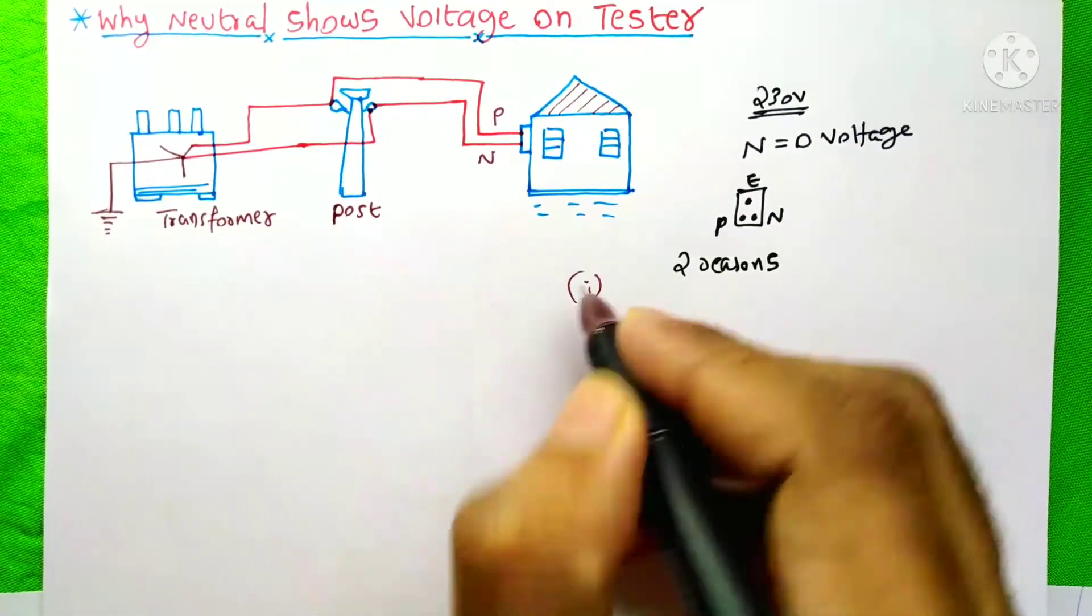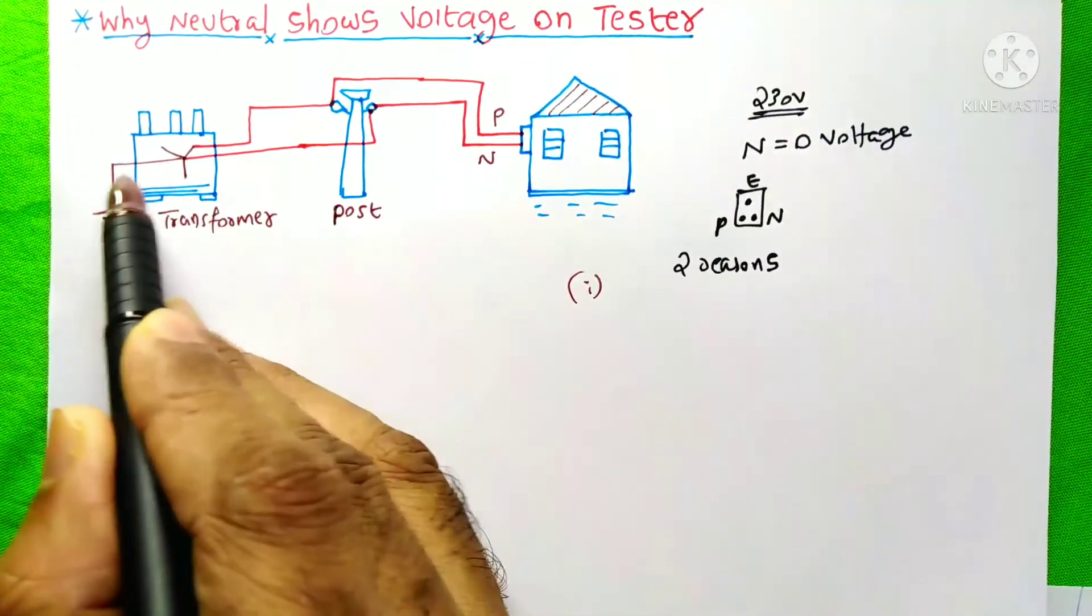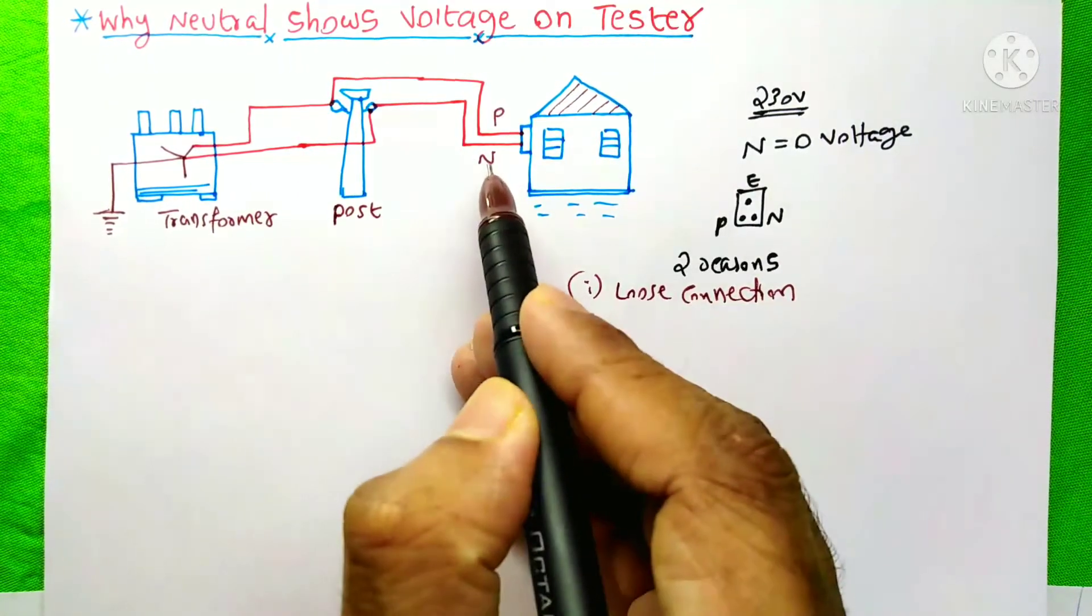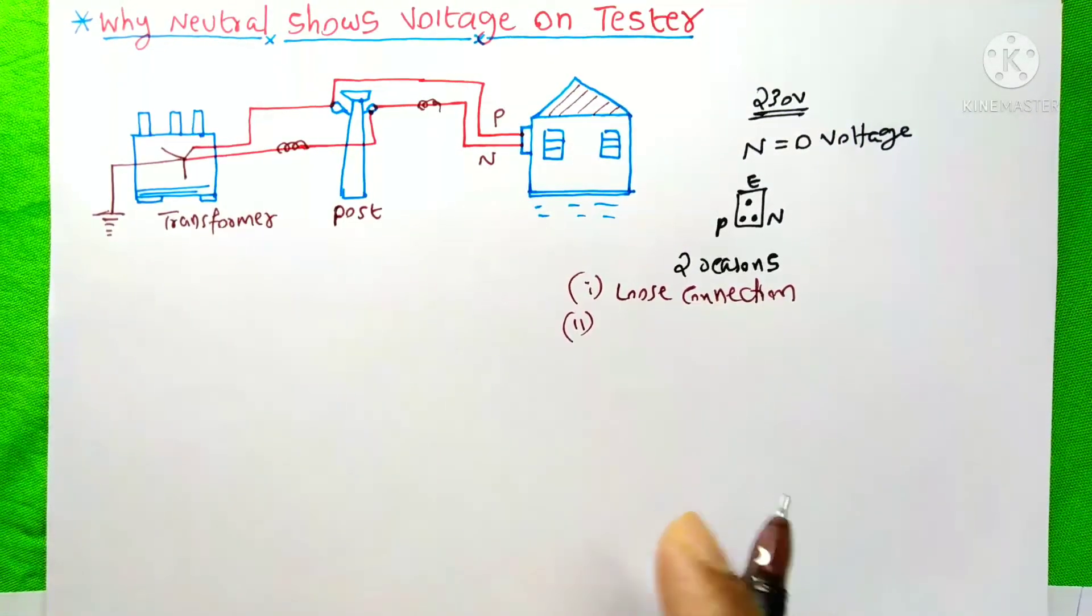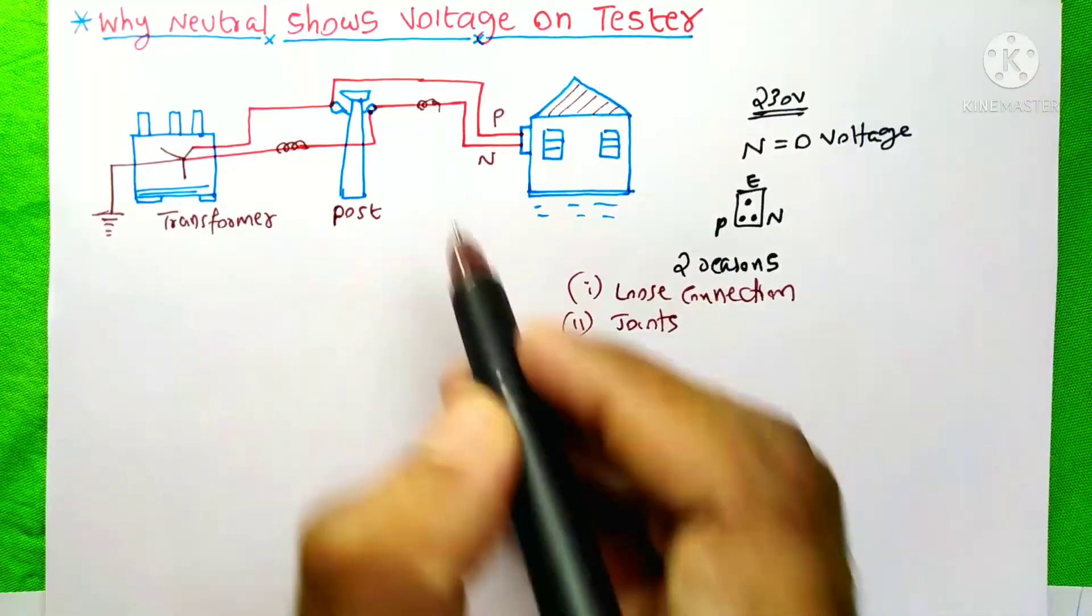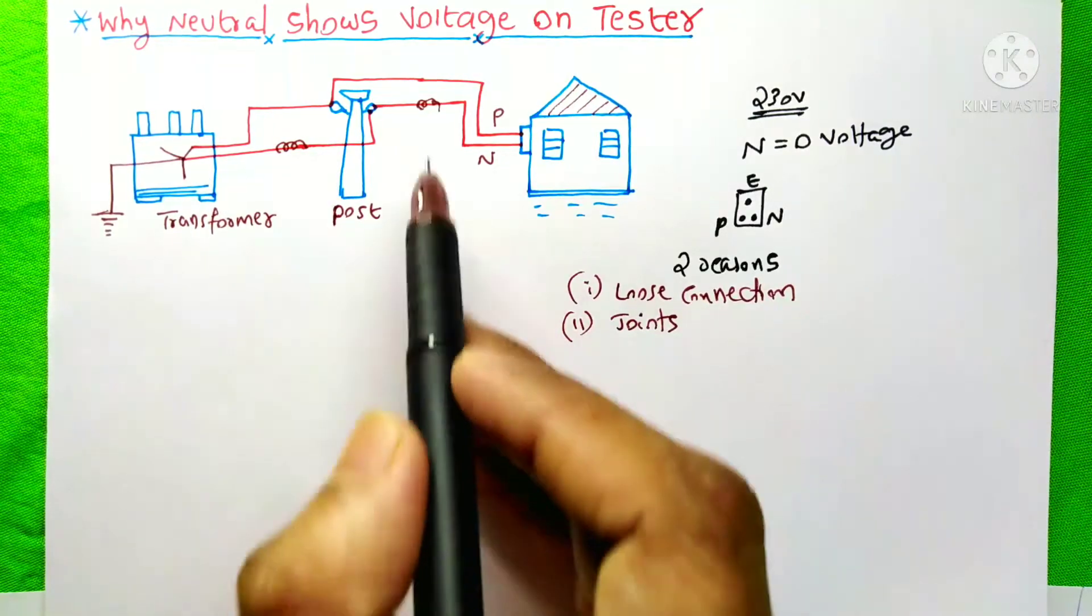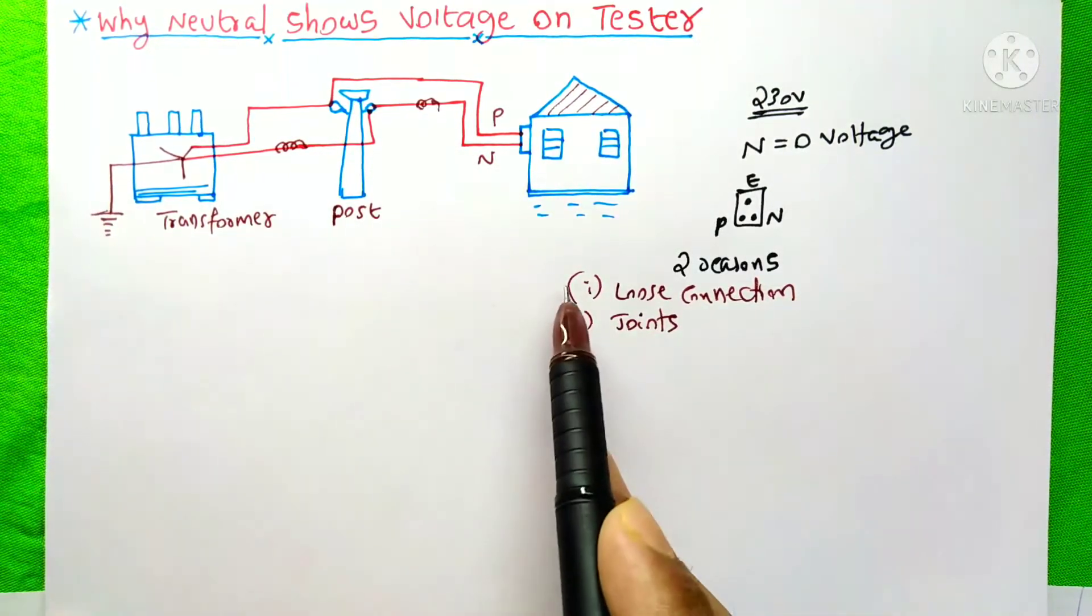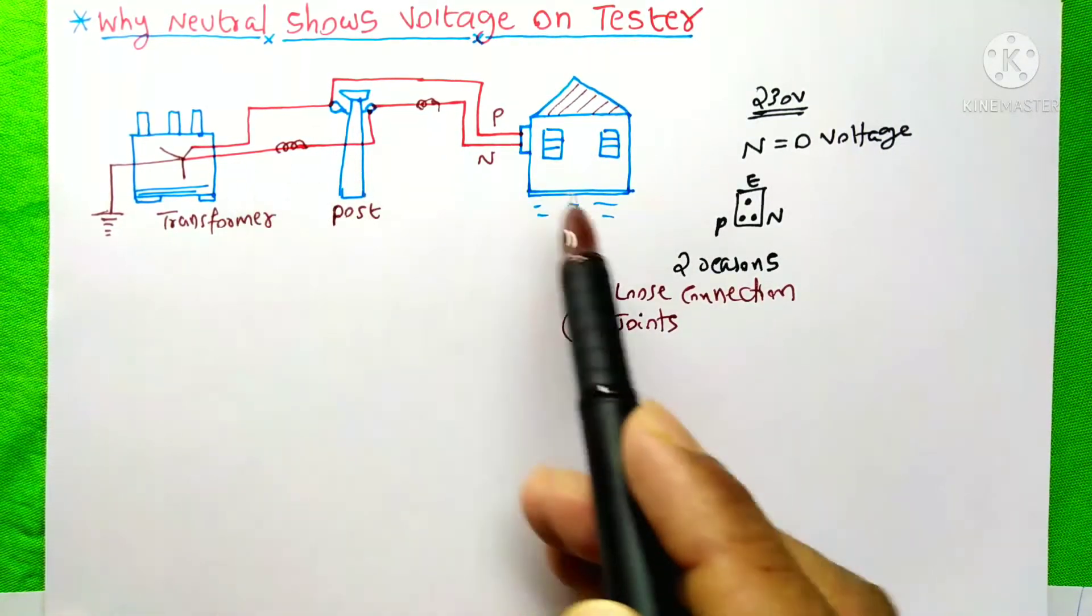The first case is some loose connection is occurring at the transformer neutral connection. Due to this loose connection, the return current through this neutral is not earthed properly. The second case is joints has been made somewhere on this neutral wire. Due to the improper joints on this neutral wire, the neutral current is blocked from this earthing. Either of these two reasons will cause the voltage on this neutral wire.